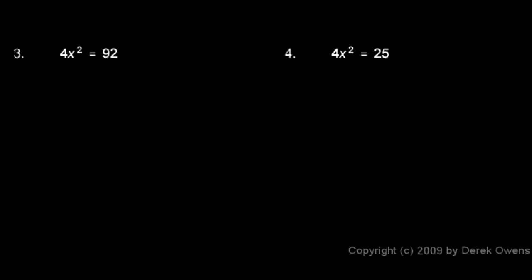In problem 3, 4x squared equals 92. We can take the square root of each side, but before I do that, I'm going to divide each side by 4. And that way, on the left, the 4's cancel out, and I'm left with x squared equals 92 divided by 4, which is 23.